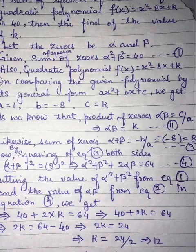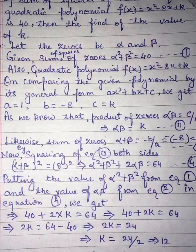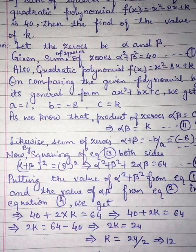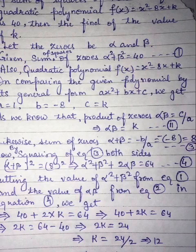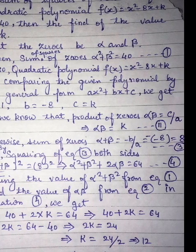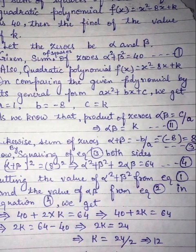Likewise, sum of zeros alpha plus beta, we know that is equal to minus b upon a. So here the value of b is equal to minus 8, so minus minus is plus, equals 8. Let's consider this equation 3.